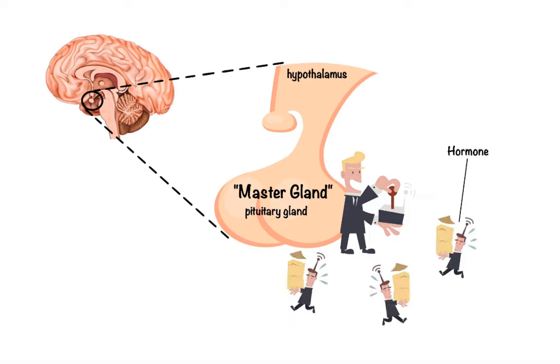Hormones are the most potent chemical messengers in our bodies, telling the body what to do and when. That's why imbalanced or poorly functioning hormones can cause a variety of medical problems.